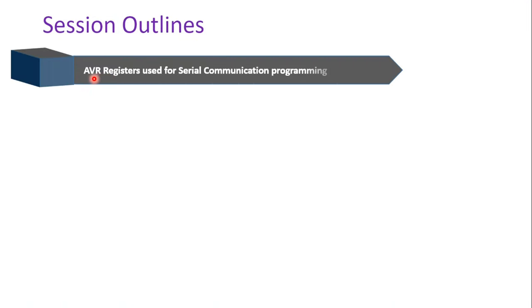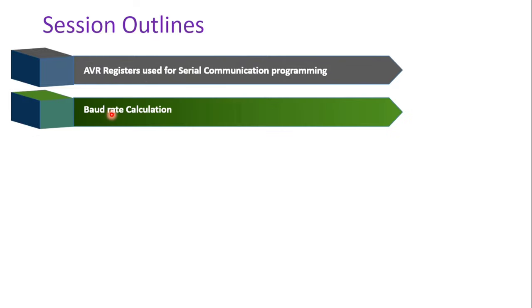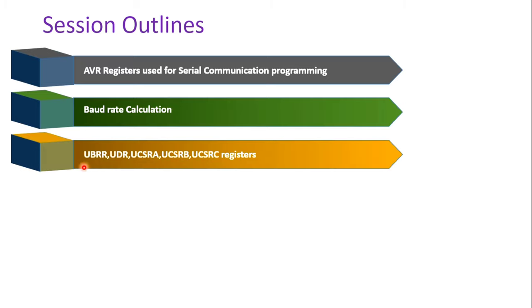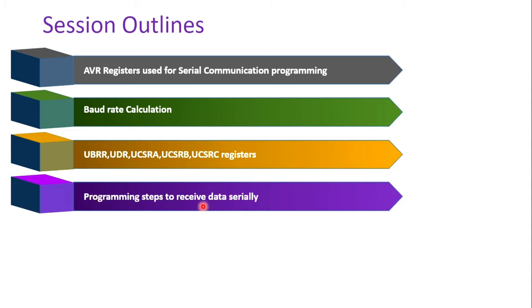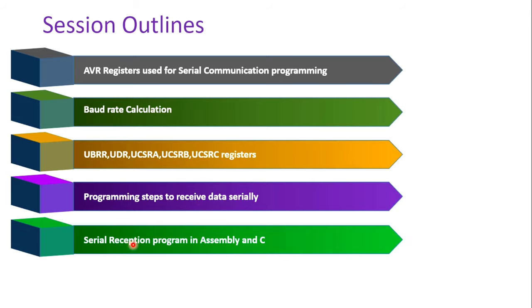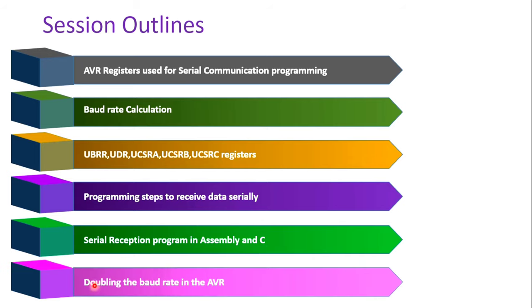These are the outline of the session. First, I will discuss AVR registers used for serial communication programming, then baud rate calculation formula. Then I will discuss UBRR, UDR, UCSRA, UCSRB, and UCSRC registers, which will be needed for serial communication programming. Then programming steps to receive data serially, and with the help of these steps, we are going to write a serial reception program in assembly language and then in C language. Finally, we will discuss how to double the baud rate or speed of the serial communication in AVR.